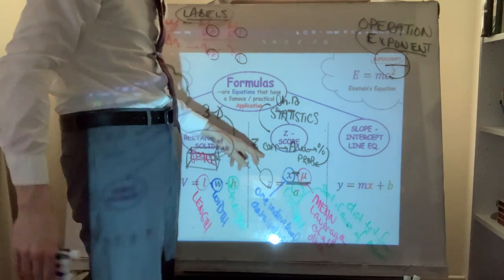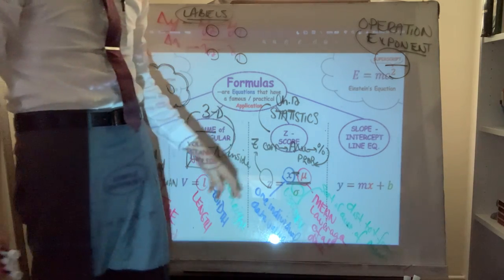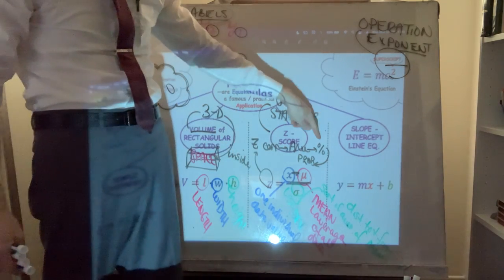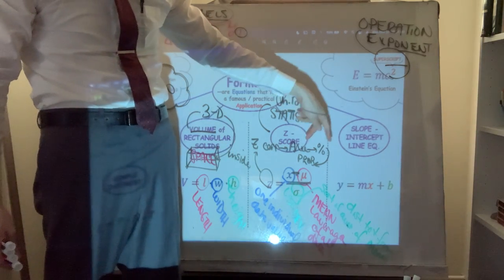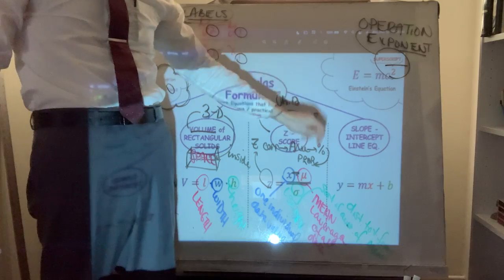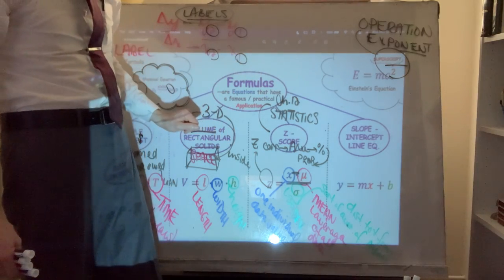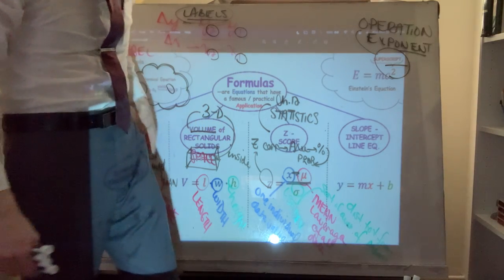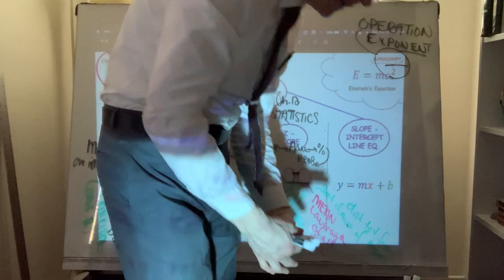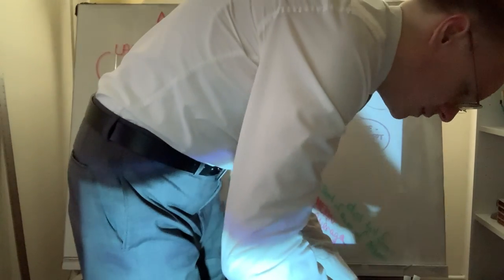This ratio corresponds to an area, which correlates to a percentage, which can be translated to a probability.